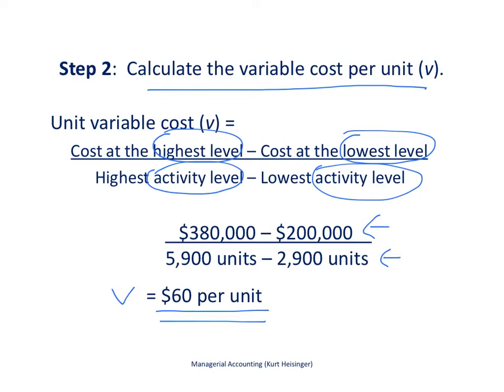In the old days they used to call this the rise, which is the numerator, over the run, the denominator. So the slope, or the variable cost per unit, in step 2 is $60.